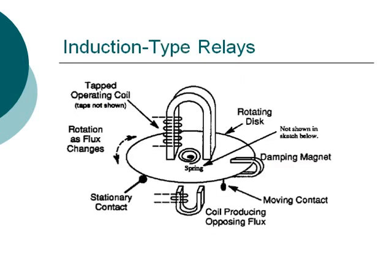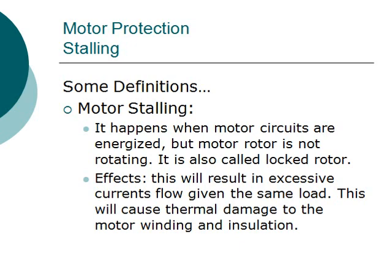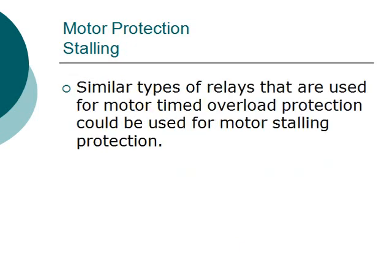Motor stalling protection: motor stalling occurs when motor circuits are energized but the motor rotor is not rotating — this is called a locked rotor. This results in excessive current flow, which causes thermal damage to the motor winding and insulation.